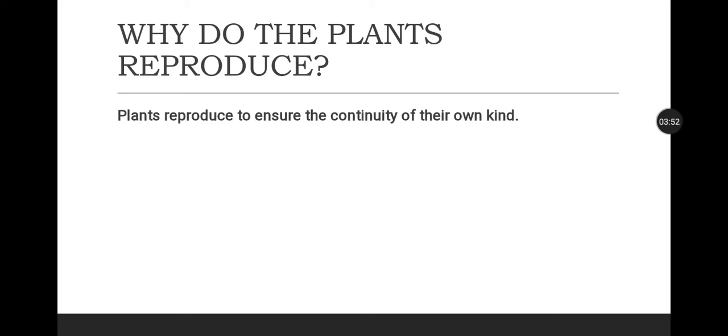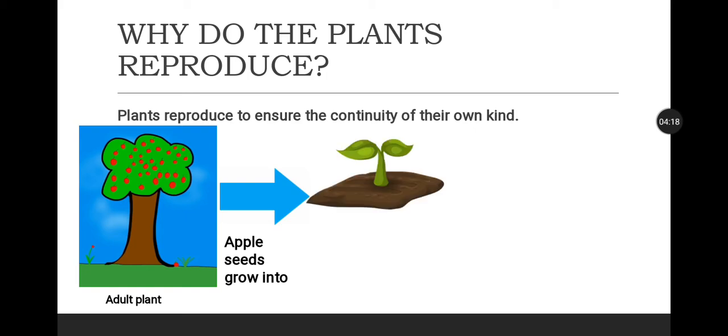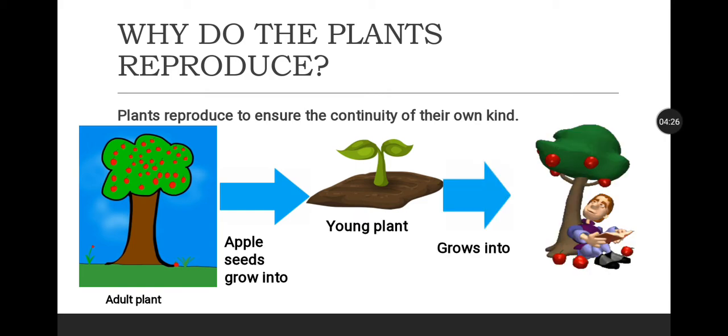To answer the first question, it is simple: plants reproduce to ensure the continuity of their own kind. Take a look at this example. This is a picture of an adult apple plant. These apples have seeds enclosed in them. When these seeds fall on the ground, they will germinate into a seedling or a young plant. This young plant then grows into an adult plant bearing apples.